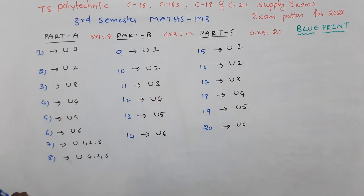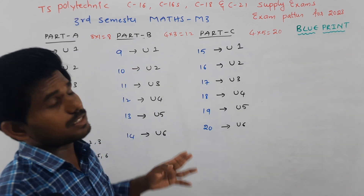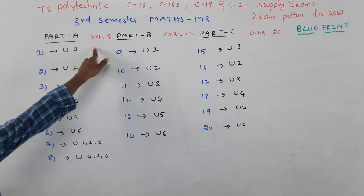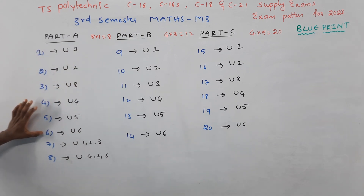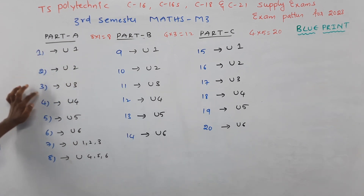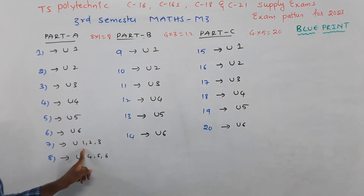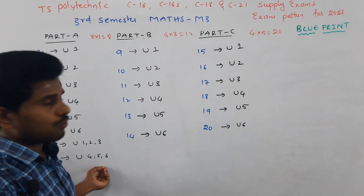In the blueprint, we have 40 marks divided into three sections: Part A, Part B, and Part C. Part A has eight questions, each carrying one mark. Part B has six questions. The questions cover the first three units — questions 7 and 8 are from the first three units.